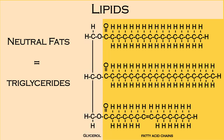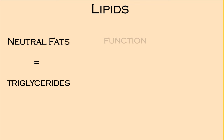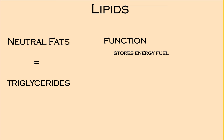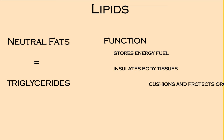The fatty acid chains are the building blocks. While these chains can differ in length, each one has an even number of carbon molecules. Neutral fat stores energy fuel, insulates body tissues, and cushions and protects organs.